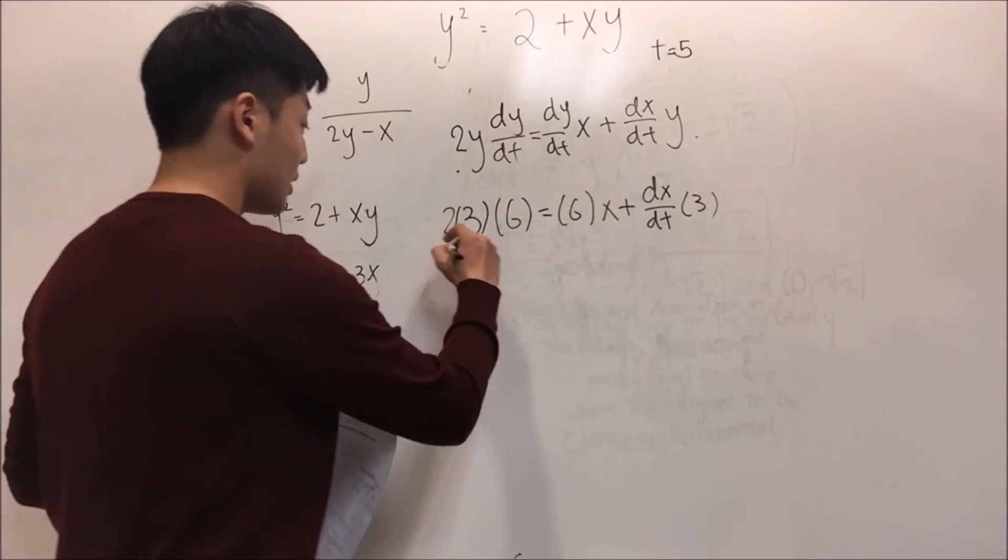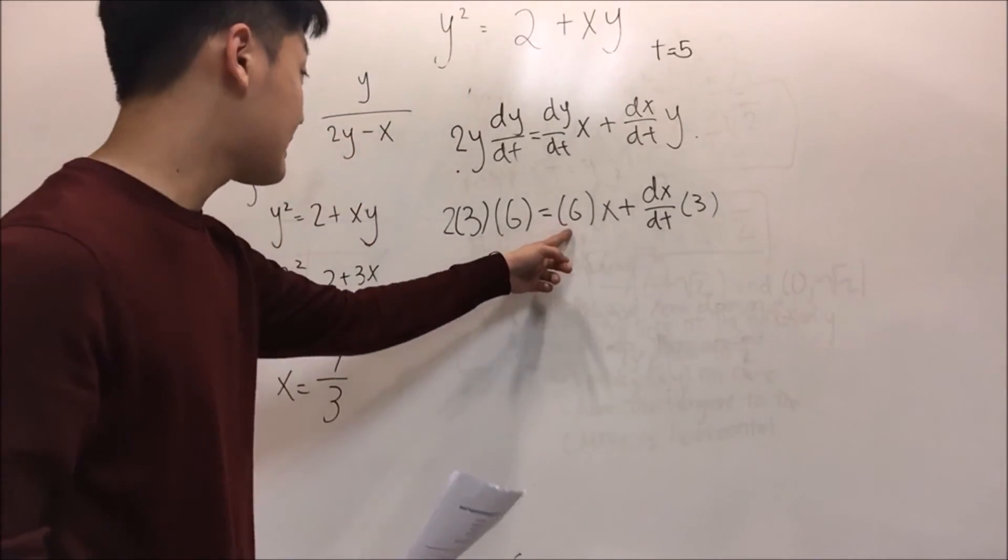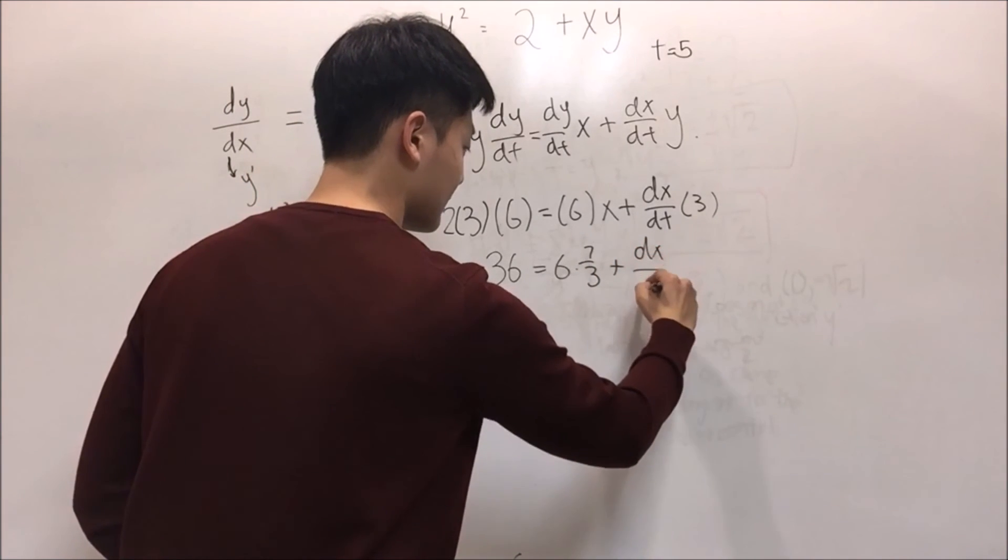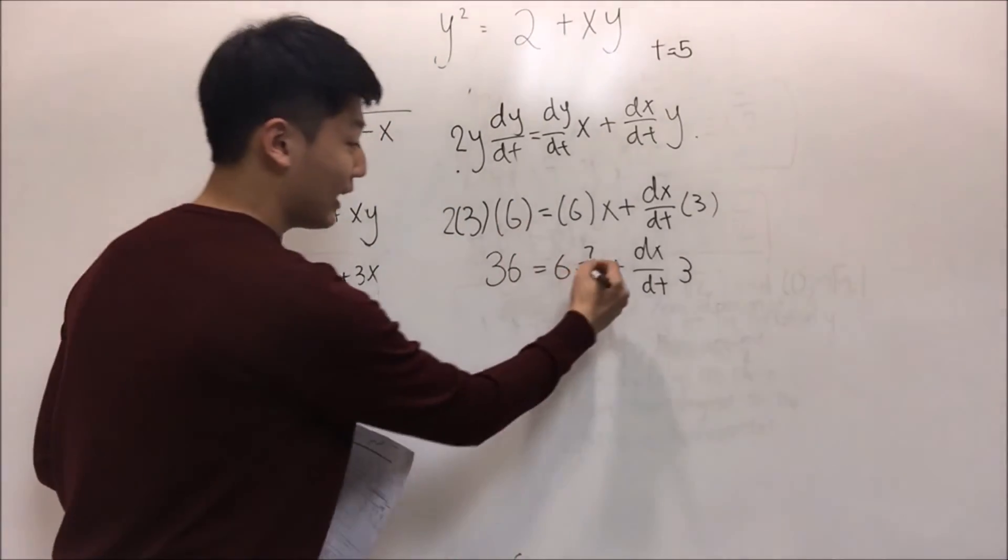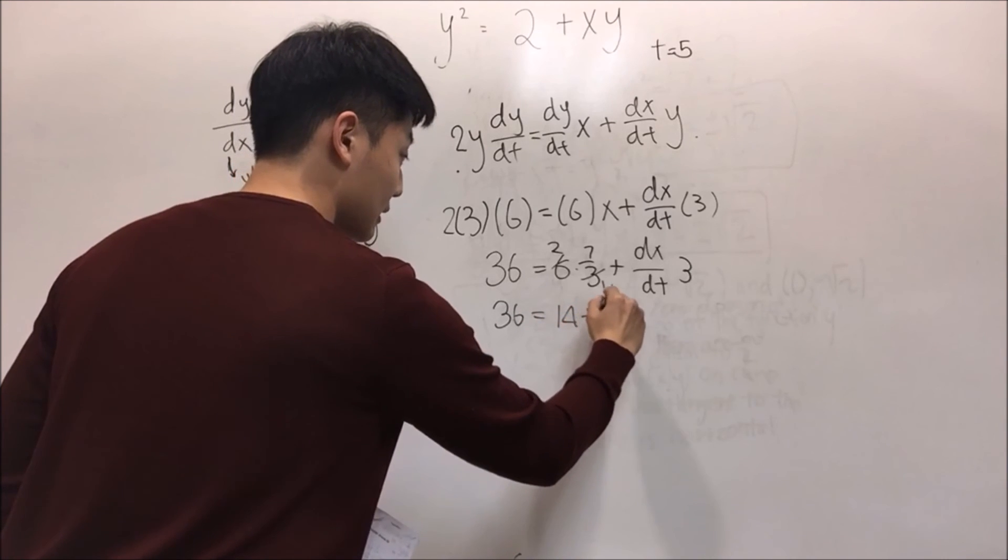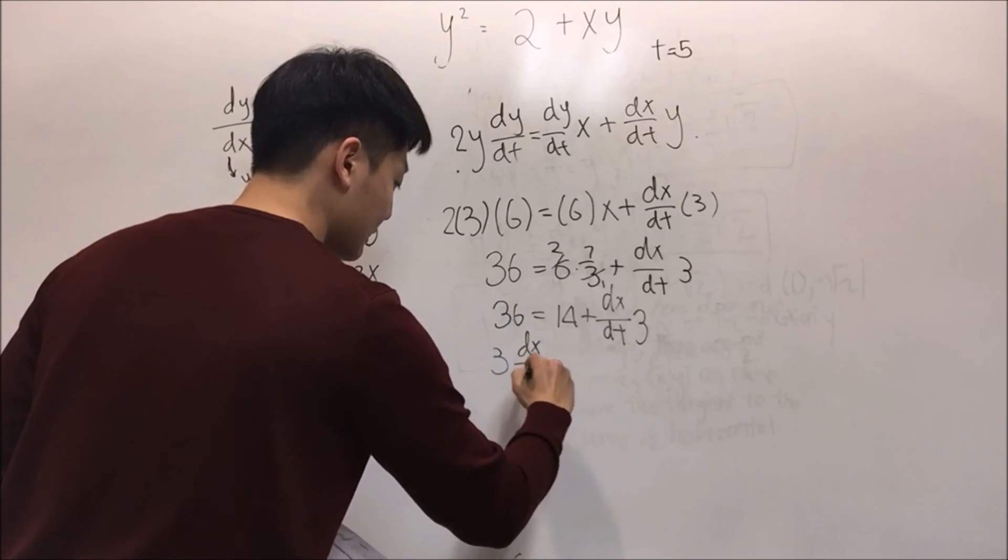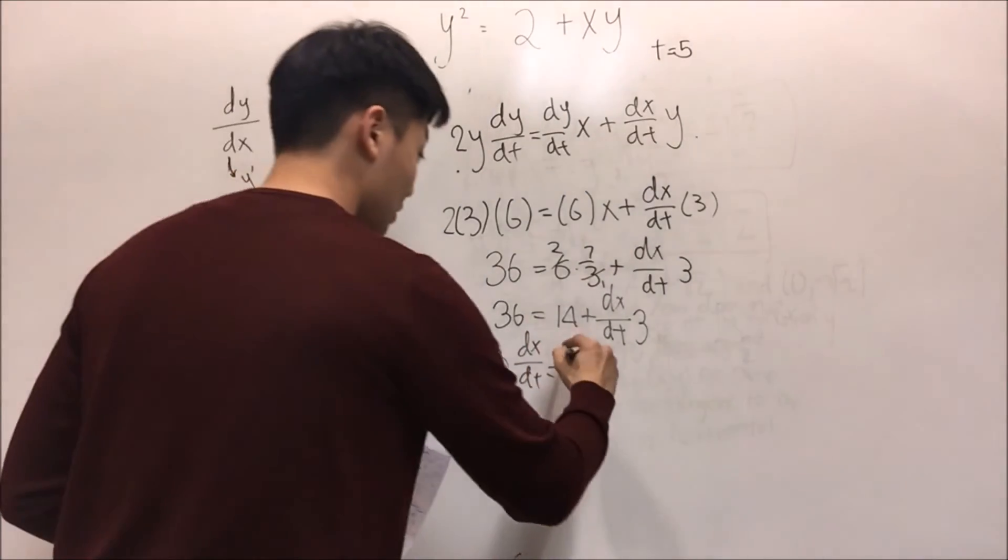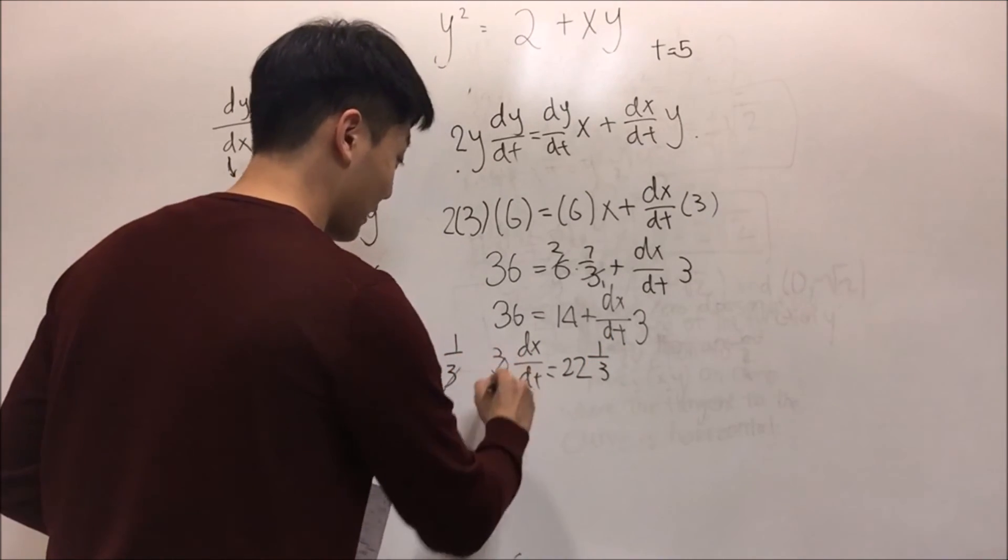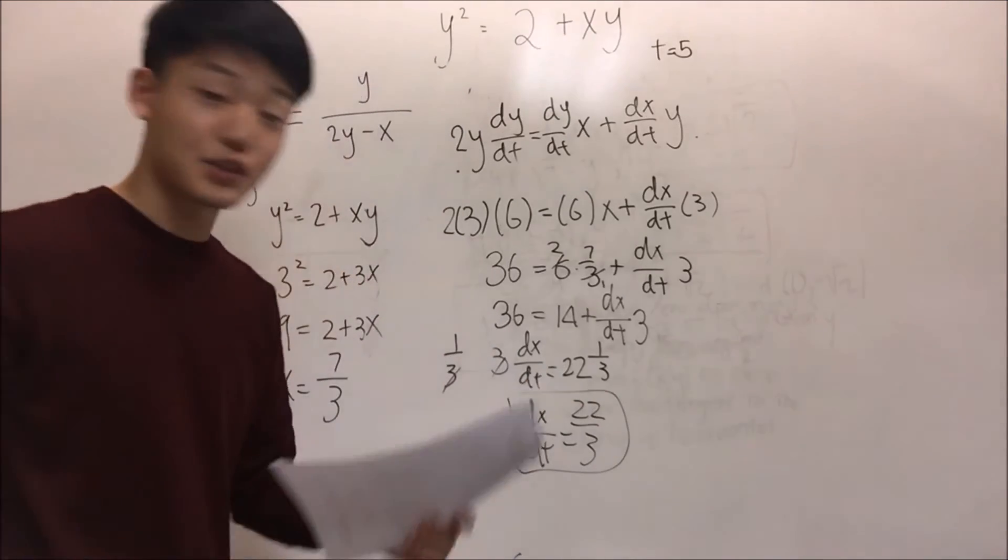Let's plug this x into here. When we calculate, what is 3 times 6? 18 times 2 is 36, equals 6 times 7 over 3 plus dx/dt times 3. Before that, let's cancel this out, which will become 14. So 36 equals 14 plus dx/dt times 3. When we move this side, it will become 3 dx/dt equals 22. We just need to multiply one-third on each side, which will become dx/dt equals 22 over 3. This will be your answer for part D.